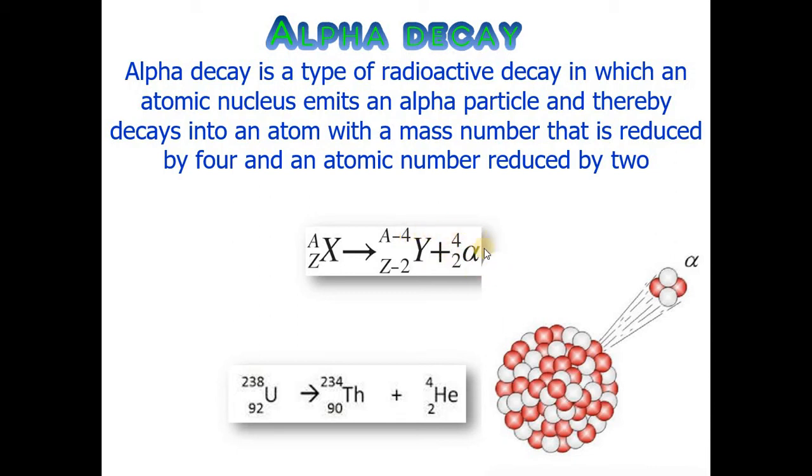As a practical example, we have a uranium isotope. It decays into thorium with the emission of alpha particles, meaning helium nuclei.